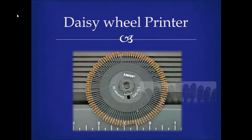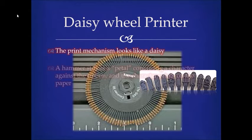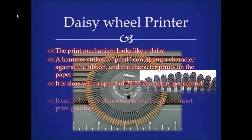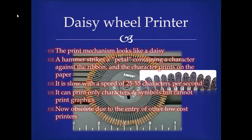Daisy wheel printer. It is called daisy wheel because the print mechanism looks like a daisy. A hammer strikes a petal containing a character against the ribbon and the character prints on the paper. It is slow, with a speed of 25–55 characters per second. It can print only characters and symbols but cannot print graphics.